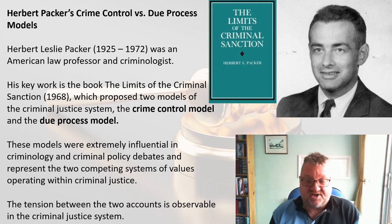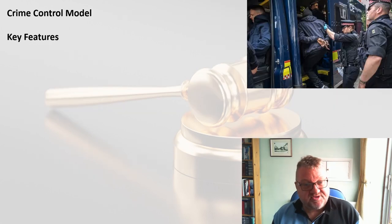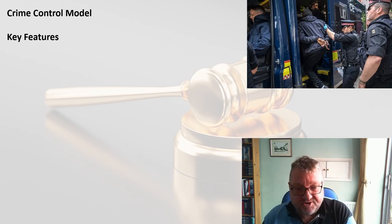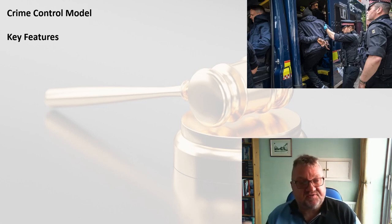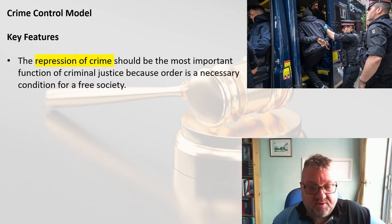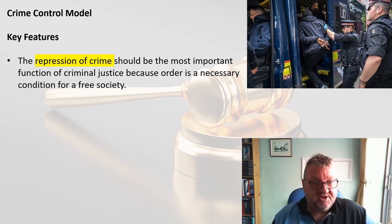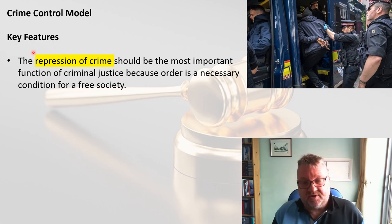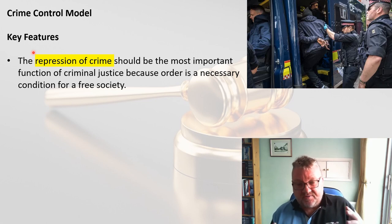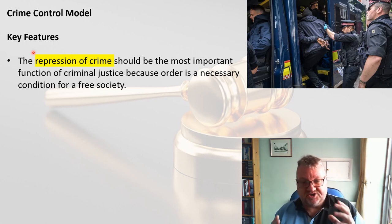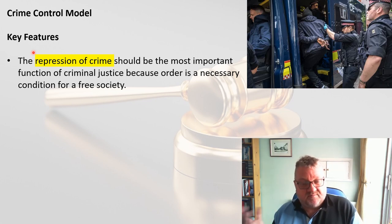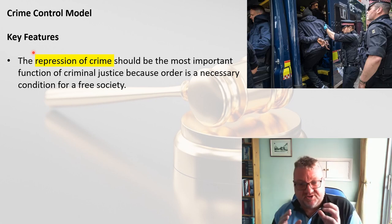Let's have a look at our first model: the crime control model. The key features of the crime control model are as follows. Perhaps most importantly, the repression of crime is the most important function of the criminal justice system — it's all about stamping out crime. The reason that's so important is because if you have a low crime rate, you have a society which is free, where everyone can live without fear of crime and get on with their lives without interference from criminals.